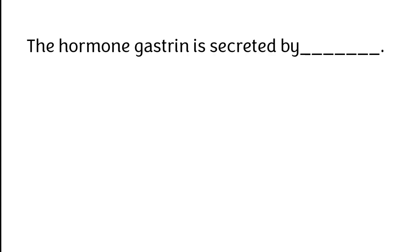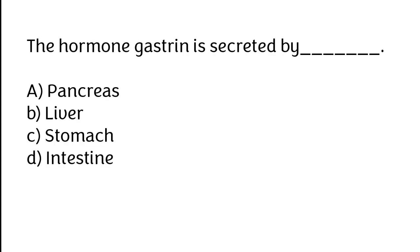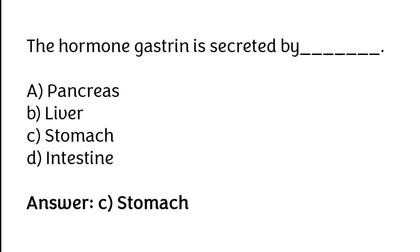The hormone gastrin is secreted by: A) Pancreas, B) Liver, C) Stomach, D) Intestine. The correct answer is option C — the hormone gastrin is secreted by the stomach.